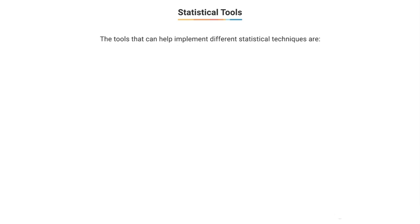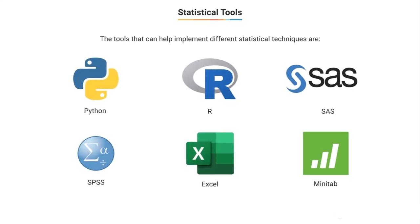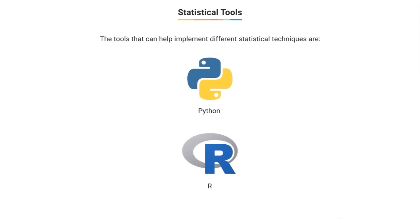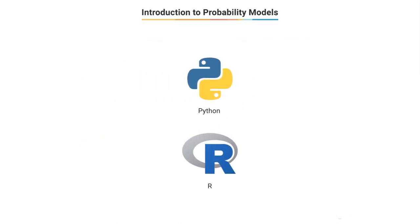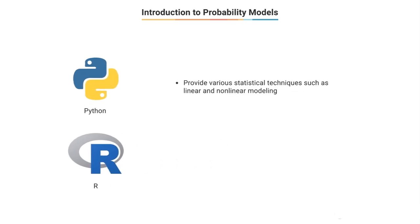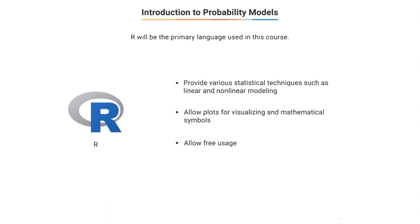In the industry, there are many tools that can be used to apply statistical techniques, such as Python, R, SAS, SPSS, Excel, and Minitab. However, the most common tools used in the industry are Python and R. Both Python and R provide a wide variety of statistical techniques such as linear and nonlinear modeling. You can easily create quality plots and include mathematical symbols and formulae with these languages. Unlike many other tools, Python and R are free to use. R is very popular among statisticians, so in this module we'll be using R as a primary tool for demonstrating concepts.